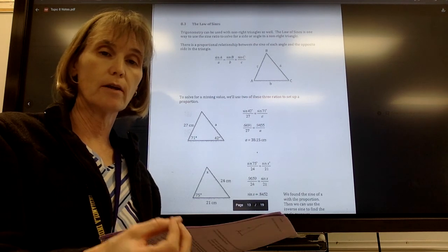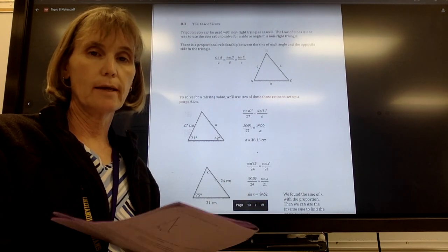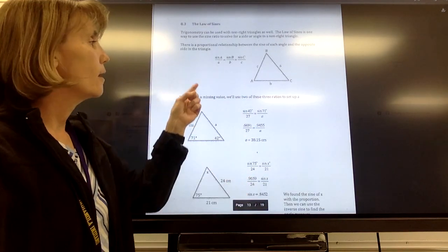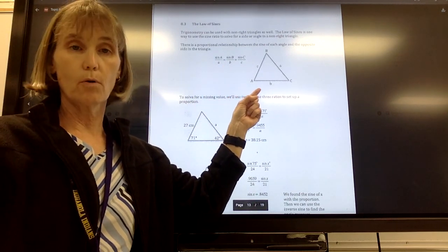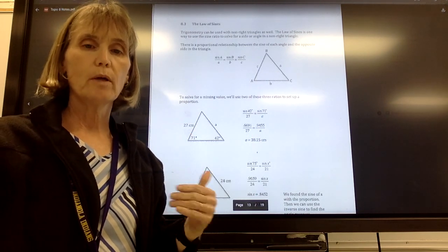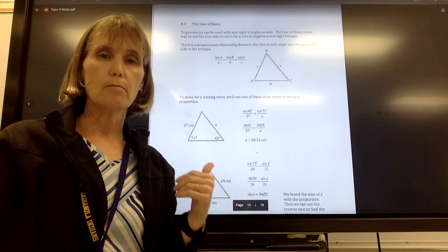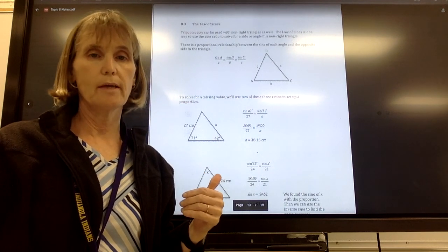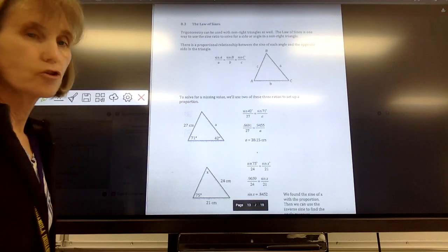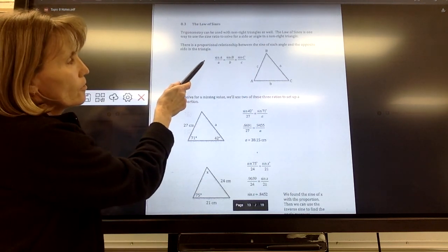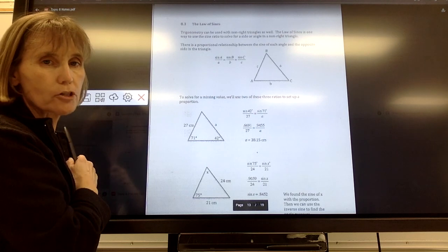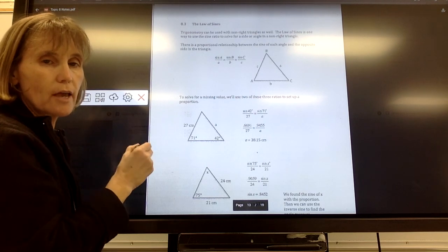And we could use those ratios to either find a missing side length or a missing angle. We're now going to look at a non-right triangle. So when we have a triangle which is no longer a right triangle, you do not see a right angle in this triangle, it's a non-right triangle, we can apply what's called the law of sines to find a missing side length or a missing angle measure. And what we know about non-right triangles is there's a proportional relationship between the sine of the angle and its side, and that proportion is equal to the angle and its side length.